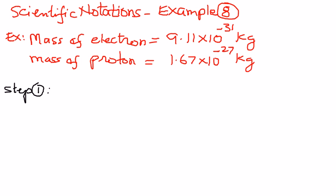When we are dealing with very small numbers and we write them in regular format, there will be so many zeros it will be very confusing. Therefore, one easy way to express those very small numbers is in scientific notation, as shown here.